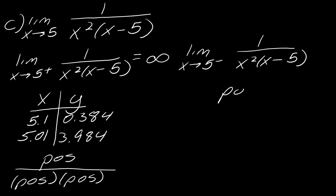So in this case, the top is always positive. The thing that's being squared is going to be positive. But now again, this is I'm really close to five, but now I'm on the left of it. That means that I'm just below five.